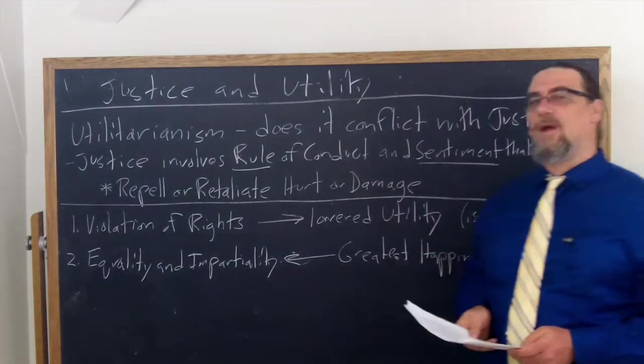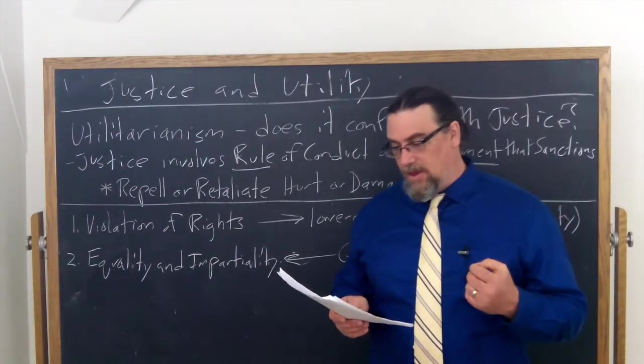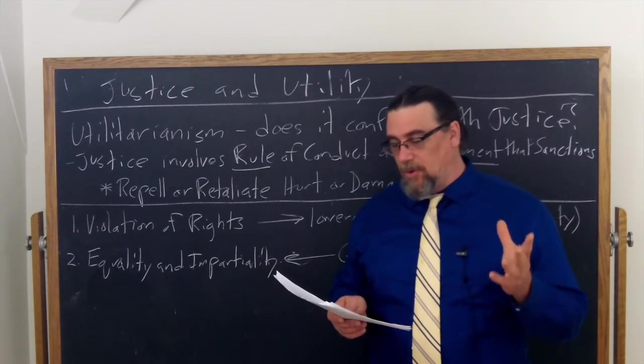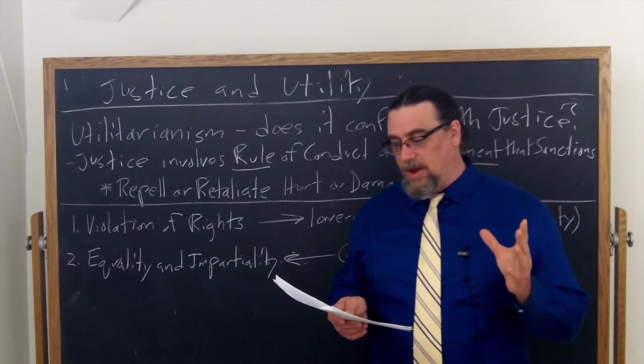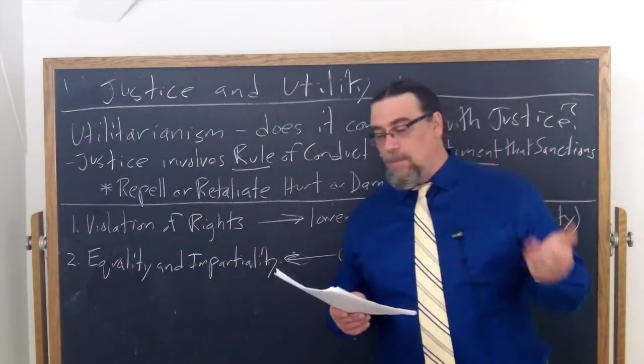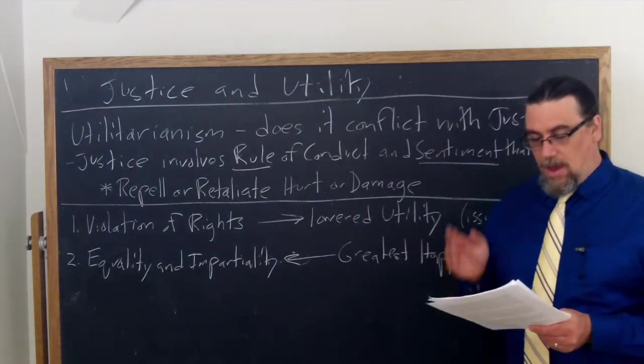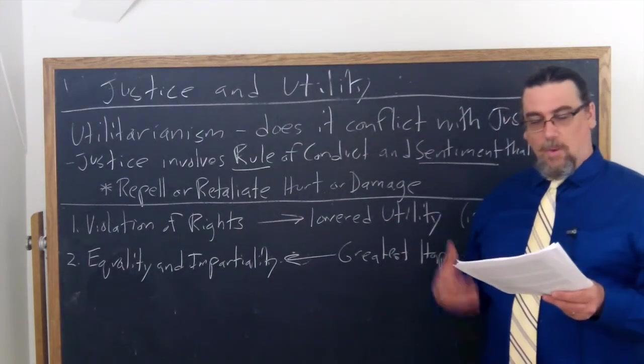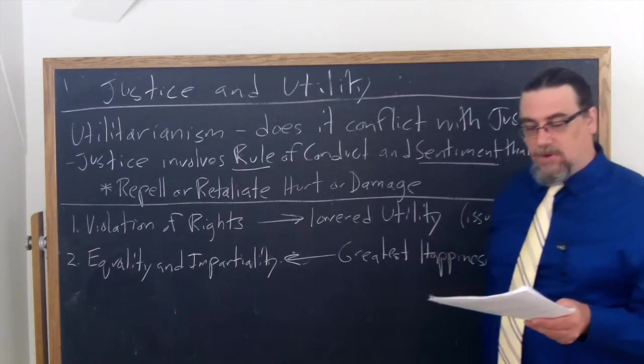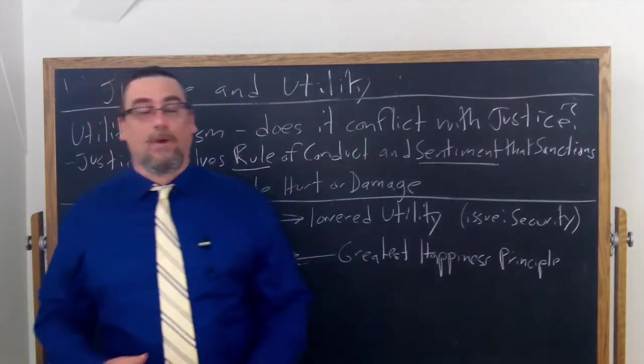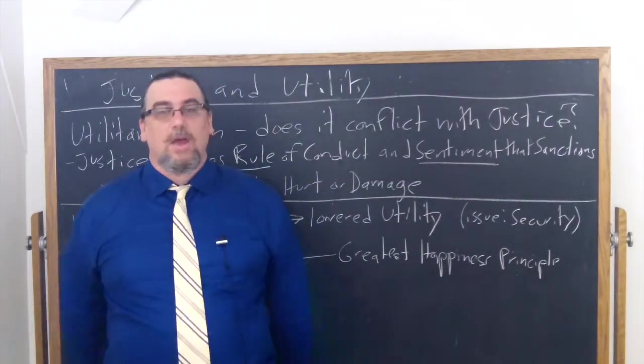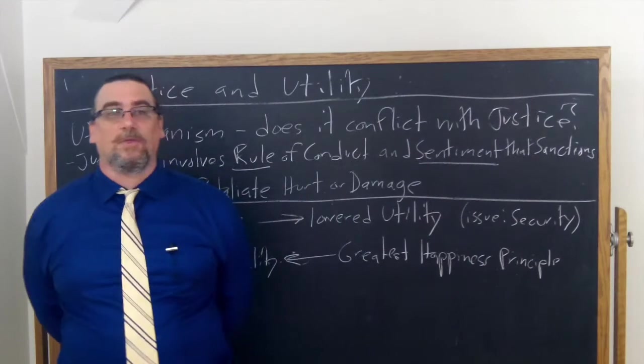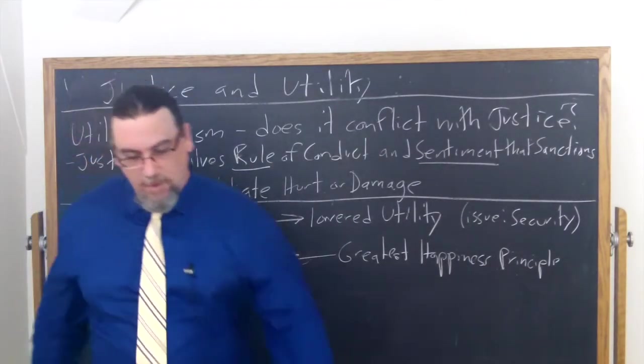So he talks first about violation of rights. He's got some interesting examples here that I think are worth thinking about. He says that when we say that something is a person's right, we mean they have a valid claim on society to protect them in the possession of it, either by the force of law or by that of education and opinion. And then he says a person, for example, has a right to what he can earn in fair professional competition. Why? Because society ought not to allow any other person to hinder him from endeavoring to earn in that manner as much as he can. So if you're a laborer, society should not try to keep you from earning something from your labor, nor should other people interfere with that and shut you out and make it impossible for you to engage in that.